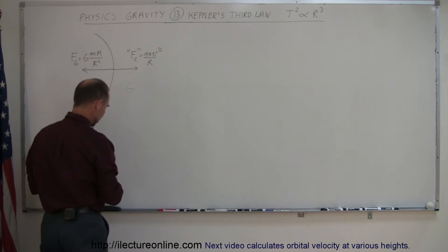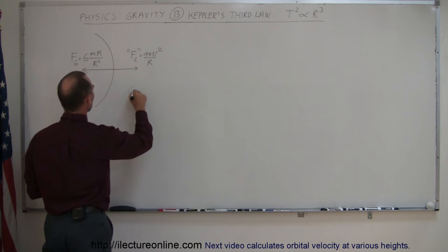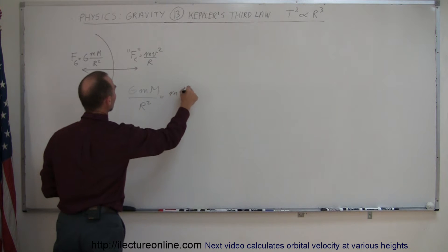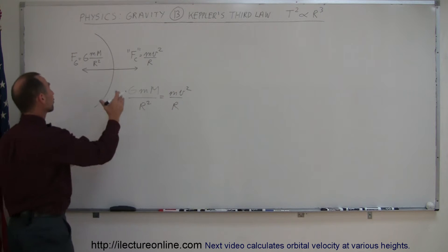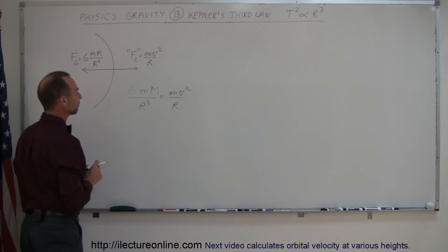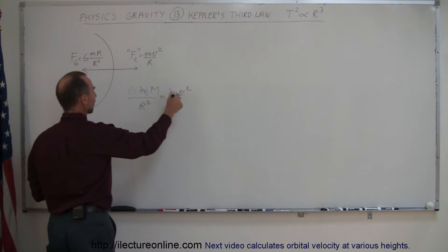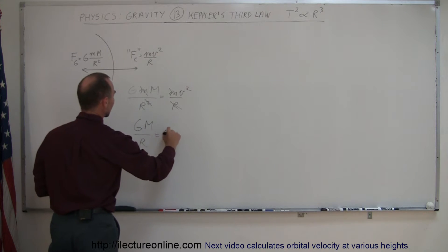we can say that G M big M divided by R squared is equal to M V squared over R. So in other words, we can say that the centripetal force is caused by the gravitational force pulling the planet inward. If we now get rid of the M on both sides, because it's the same, and we get rid of this R and that R, we can now say that G M over R is equal to V squared.